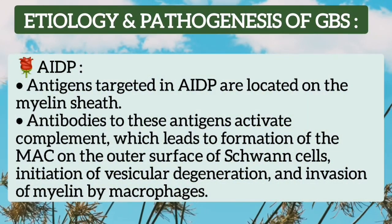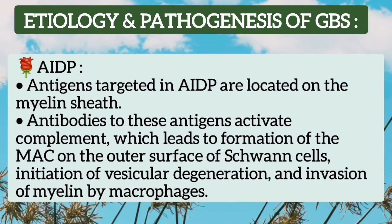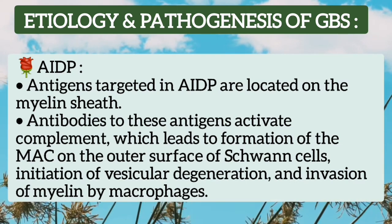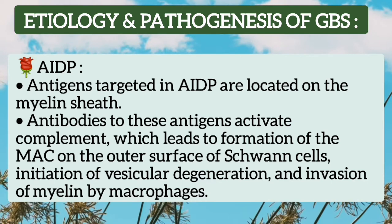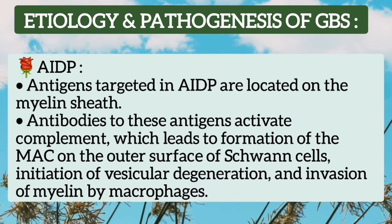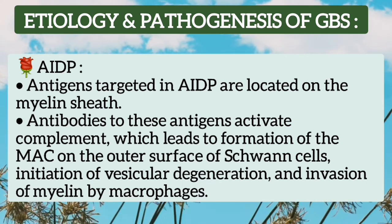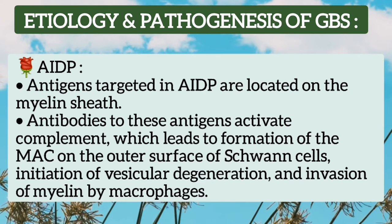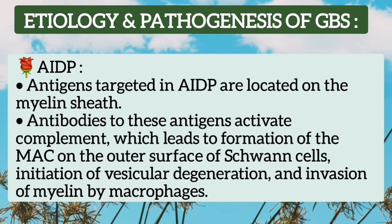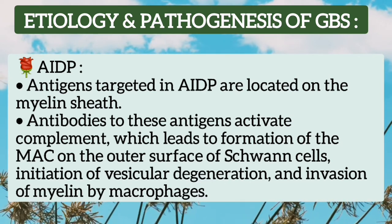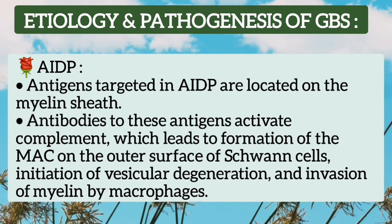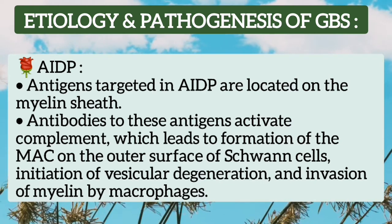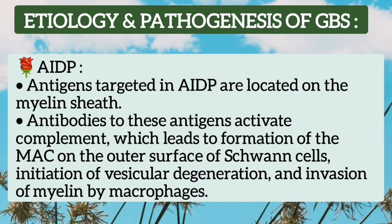This damage leads to detachment of paranodal myelin and nerve conduction failure. In acute inflammatory demyelinating polyradiculoneuropathy, the antigens targeted are located on the myelin sheath. Specific antibodies bind to these antigens and activate complement, leading to formation of membrane attack complex on the surface of the Schwann cell. There is vesicular degeneration and invasion of the myelin by macrophages.